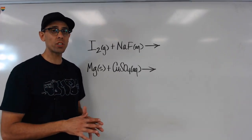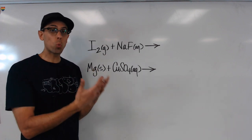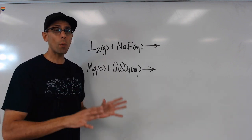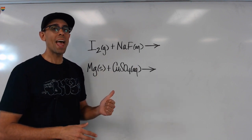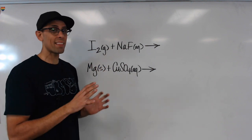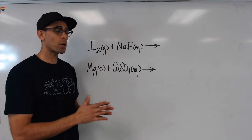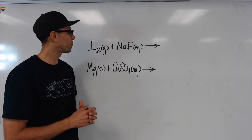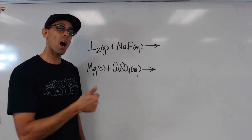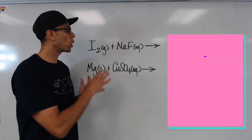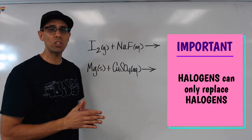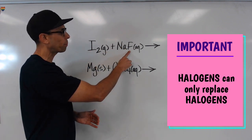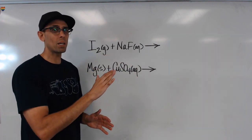Let's put what we've learned into action. Here on the board I have two different reactions, and imagine we're asked whether or not there's single replacement and what the products might be. Knowing whether or not there's single replacement is a matter of looking for the single element and whether or not it's reacting with a compound — and in both of these instances, that's exactly what we have. Let's start with the first example: iodine gas. Iodine is a halogen, a nonmetal. That means it would only be able to replace the element in the compound that's of a similar nature — another halogen or nonmetal. So what I'm thinking about is whether iodine is going to be able to replace the fluorine. It's not going to be able to replace sodium because that's a metal — they're too different from one another.